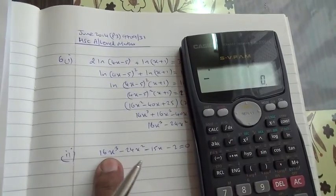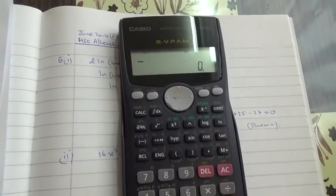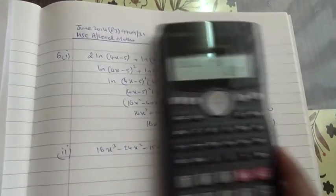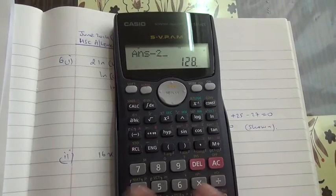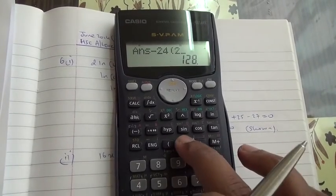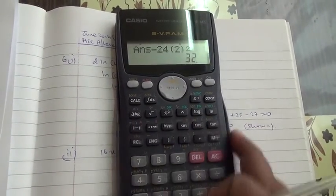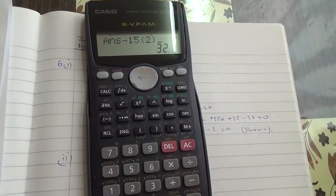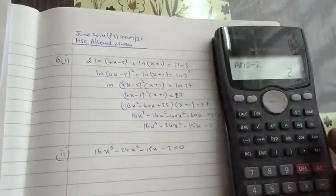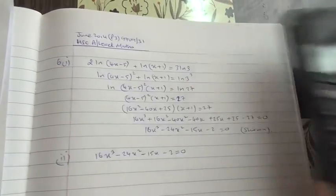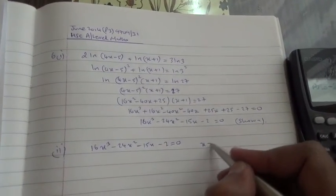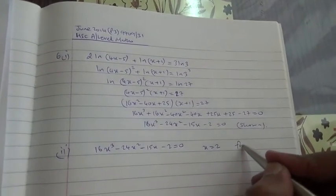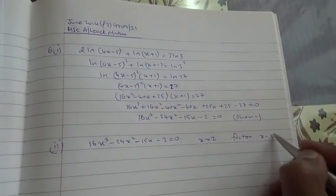What if we try x = 2? Substituting: 16 × 2³ − 24 × 2² − 15 × 2 − 2, which gives 0. Therefore x = 2 is a solution, and hence the factor is (x − 2).